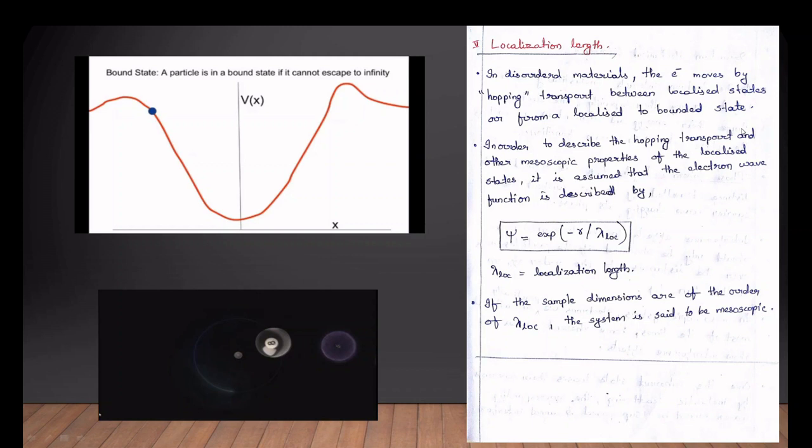This is the mesoscopic system. We are going to describe the same characteristic lengths: the de Broglie wavelength and the momentum of an electron. The second parameter is the mean free path — we cover the electron in the elastic collision. That is the mean free path.